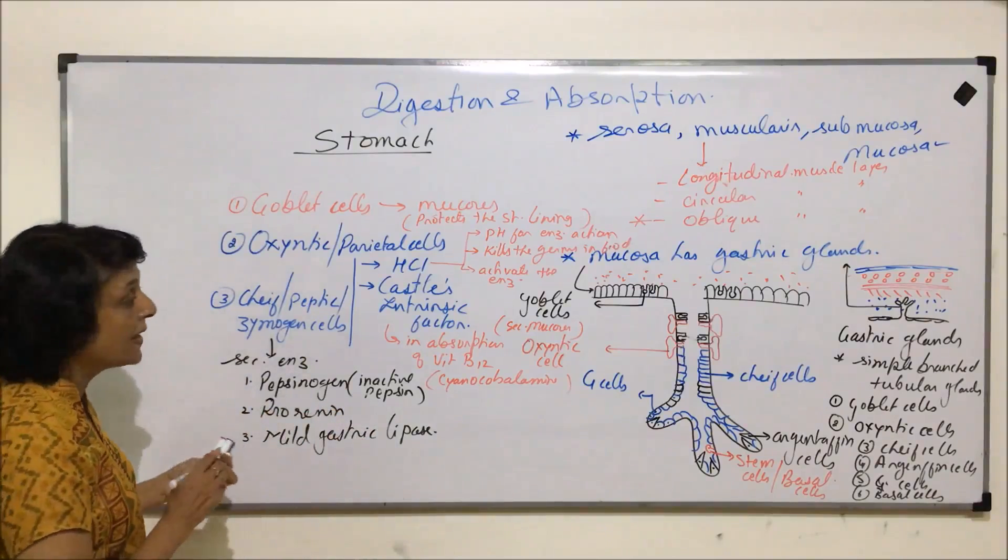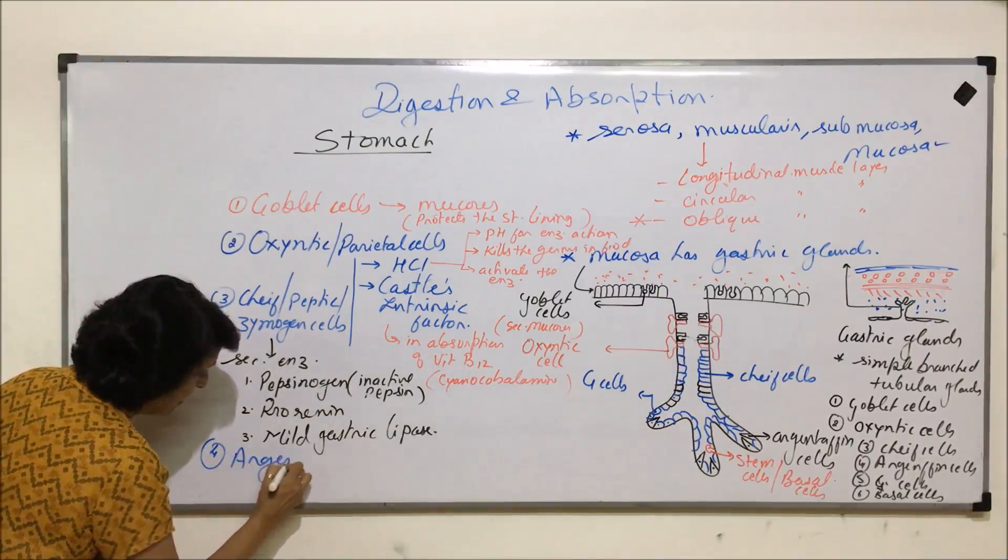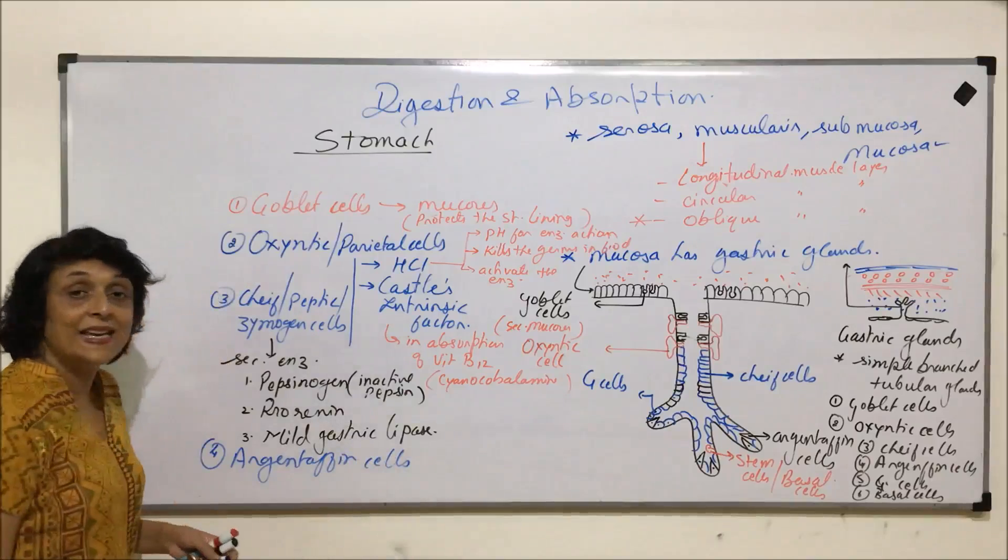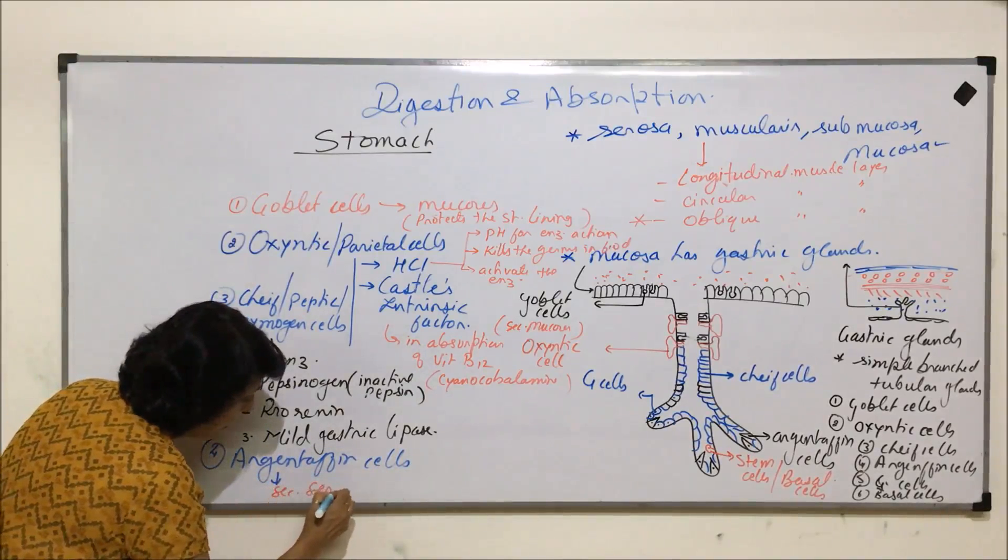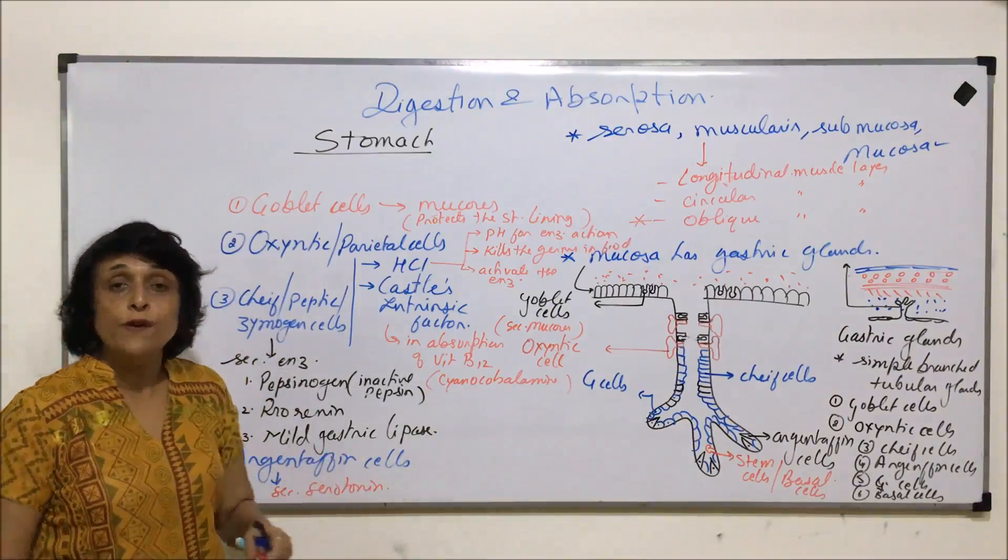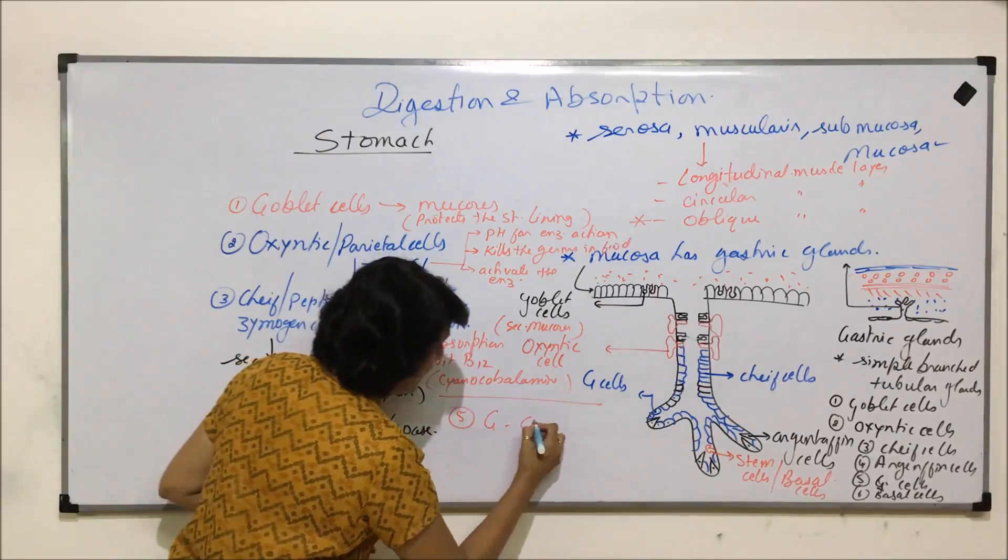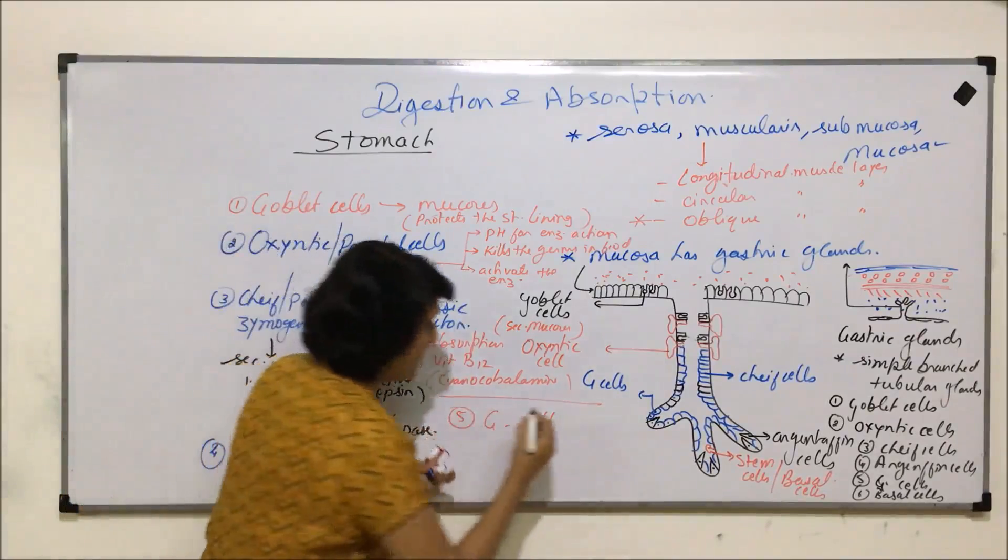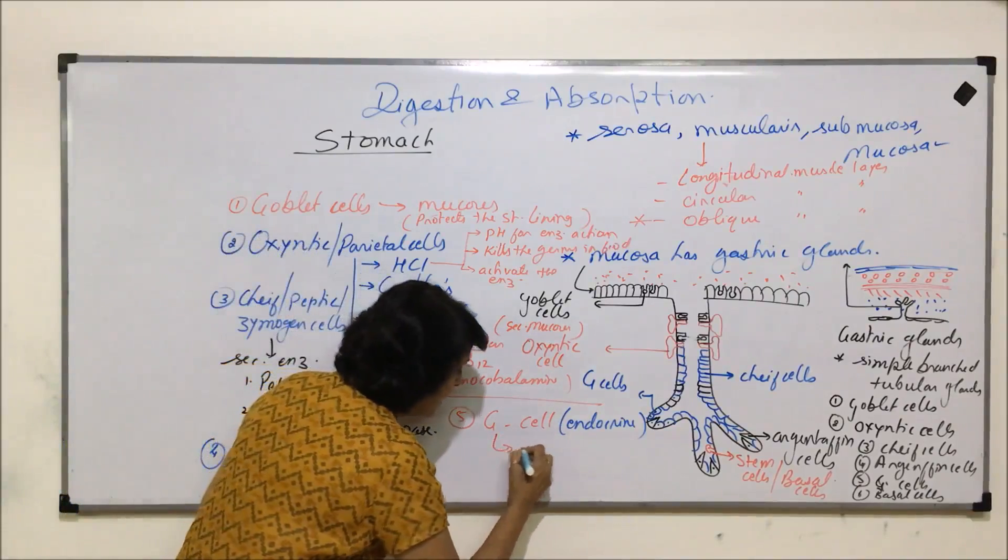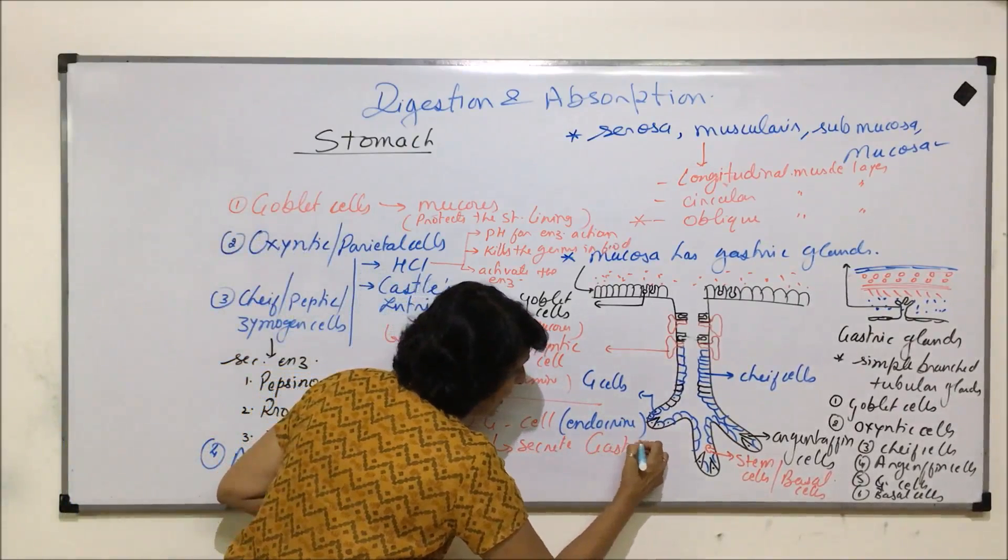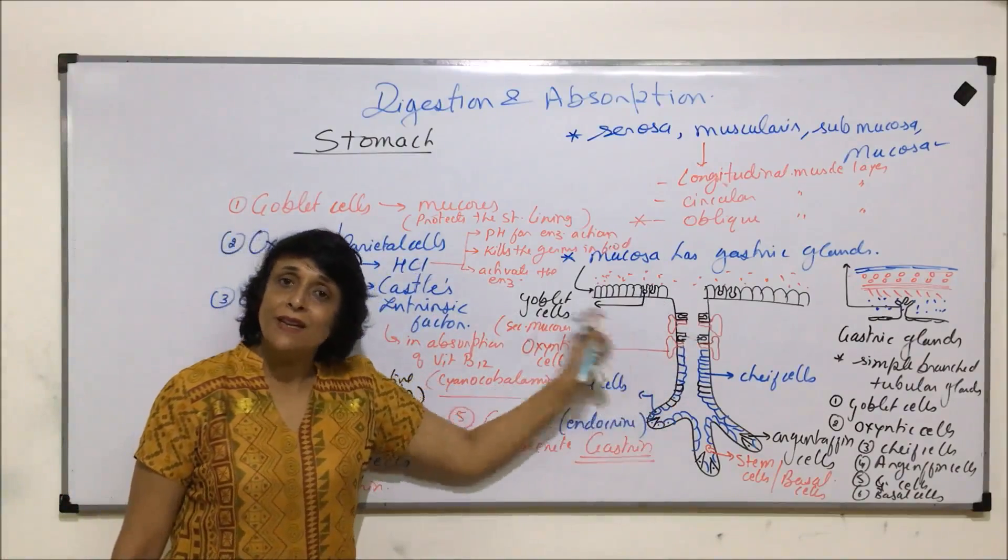The next cell, the fourth one, are argentafil cells. They secrete a substance called serotonin and help in contraction of the muscles of the stomach. Fifth cell, that is G cell. These are endocrine cells. They secrete a local hormone called gastrin. It is a local hormone which is going to stimulate the secretion of all other cells of the gastric glands.